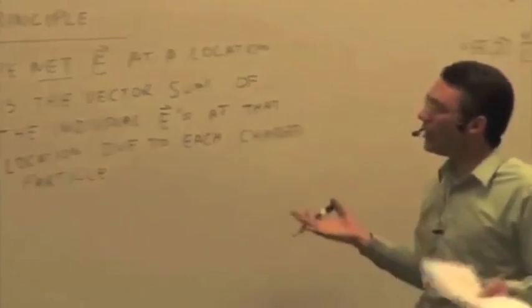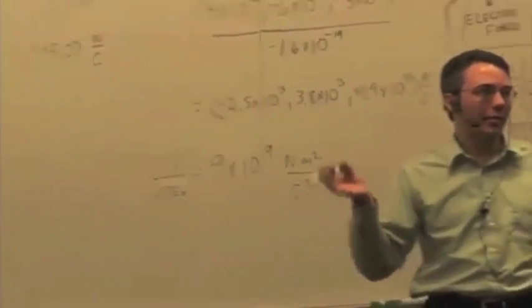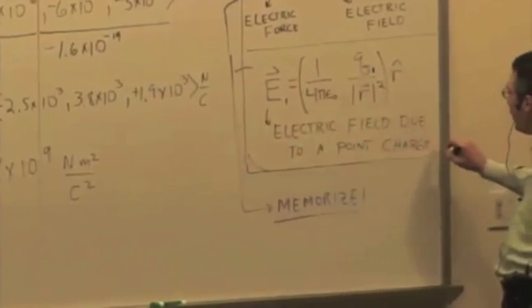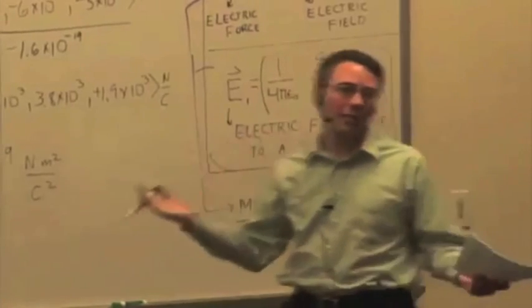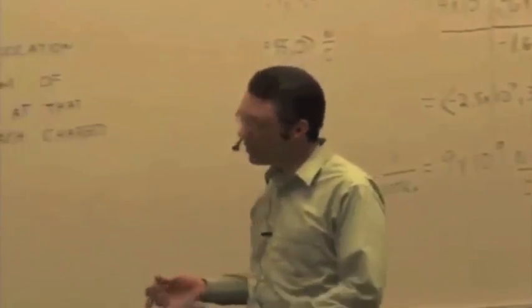It's a long-winded way of saying that if I have more than one point charge around, I can find the electric field of one and the electric field of the other just using our field of a point charge formula and just add them up as vectors and get the total or net electric field at any particular location.